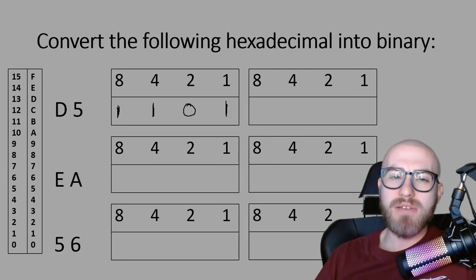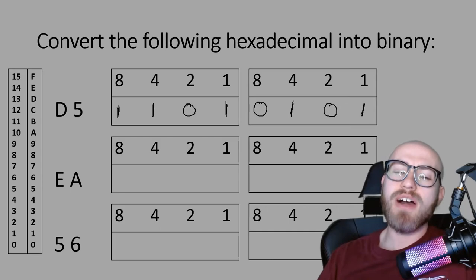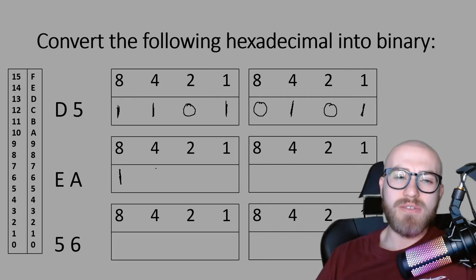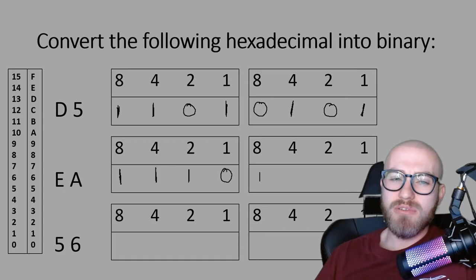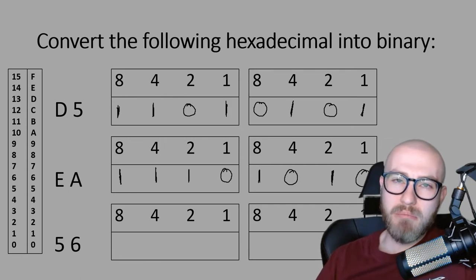On a separate nibble to the right we need to make 5: we don't need the 8, we do need the 4, we don't need the 2, and we do need the 1. For the next example, converting the hexadecimal EA: E is the equivalent of 14, so we need 8, 4, 2, and not 1. A is the equivalent of 10, so we need 8, not 4, we do need the 2, and not the 1.